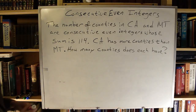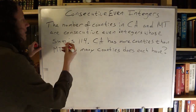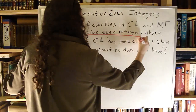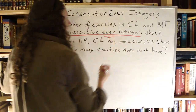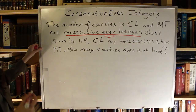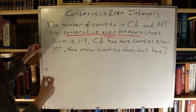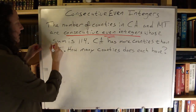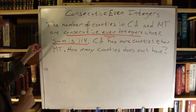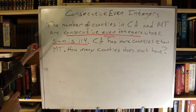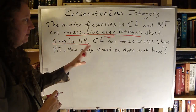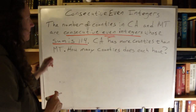As I read this, I see key phrases. I see they have consecutive even integers, and I see their sum is 114. I'm going to work with just that for now and leave the rest for a little later.